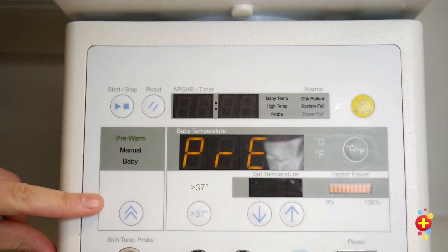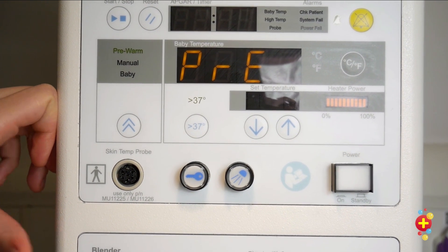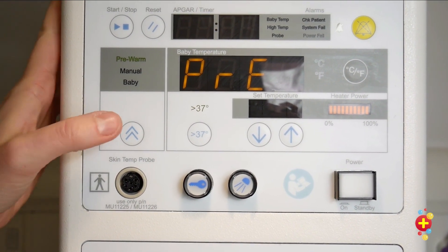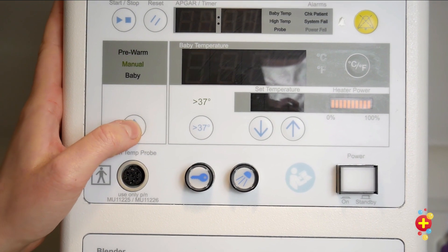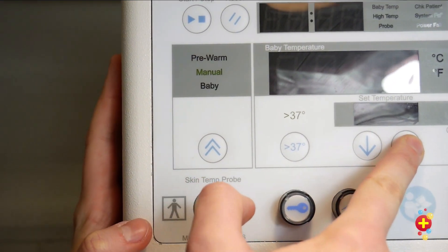Moving down, we have the temperature settings. The machine will automatically turn itself to pre-warm, but say for example you want to increase the temperature of the machine in a hurry, use this button to switch it to manual. You can then dial up the temperature with these buttons here.